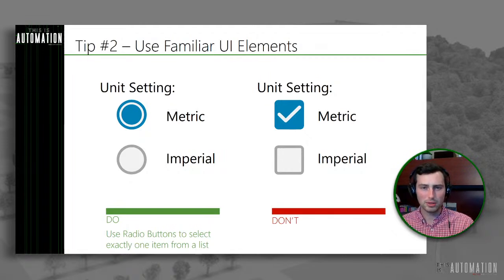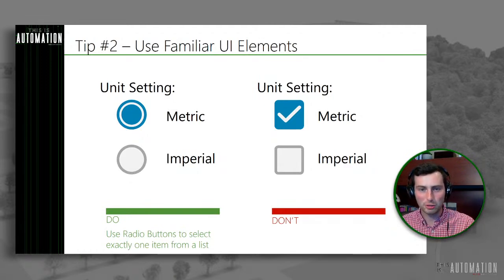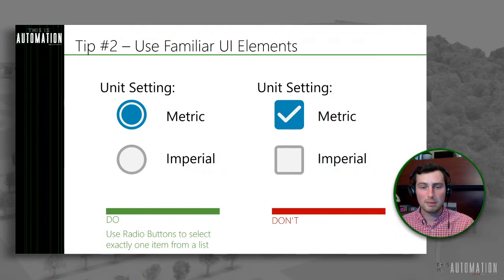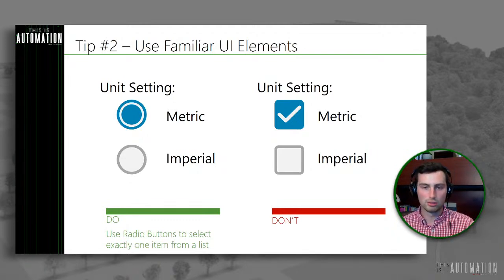Use familiar UI elements. Take advantage of all the work that's been done out there. Take advantage of the phones that we're in front of for so many hours a day and use some of the stuff being used in those. It's going to make your HMI feel really modern, and people are going to understand how to use it much, much faster. It's going to reduce training, it's going to reduce errors — all of that is really, really good.